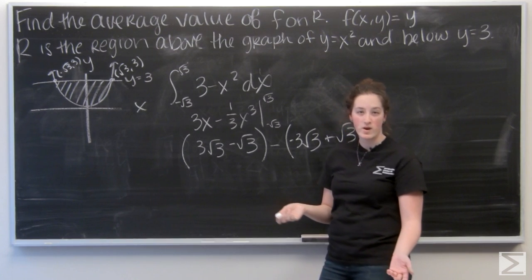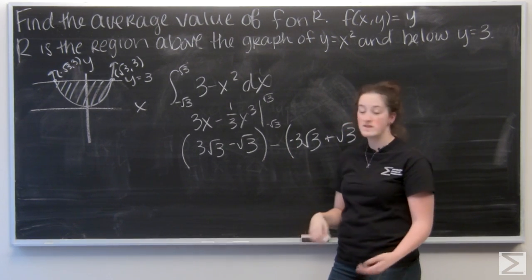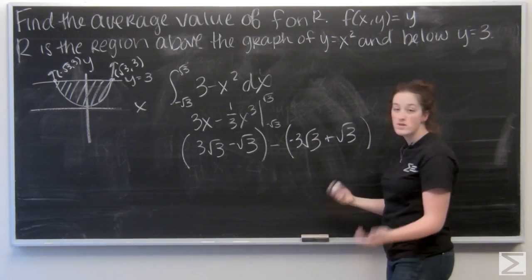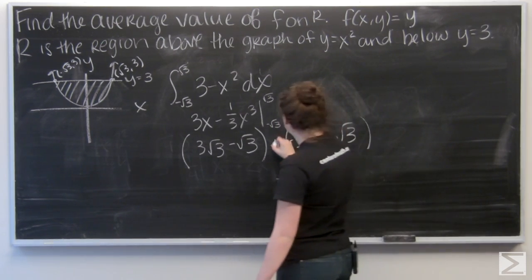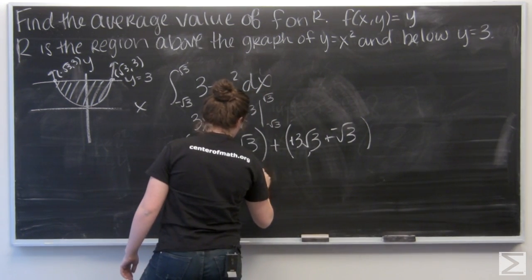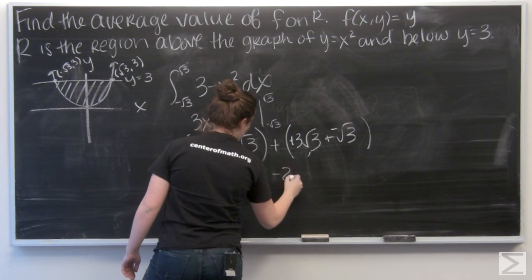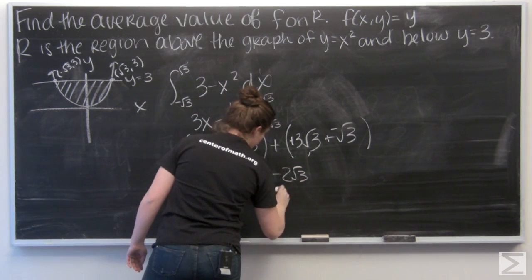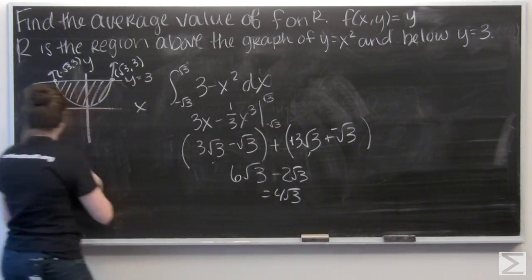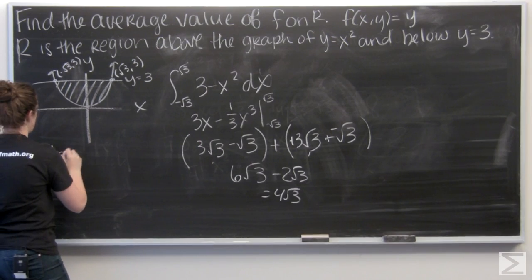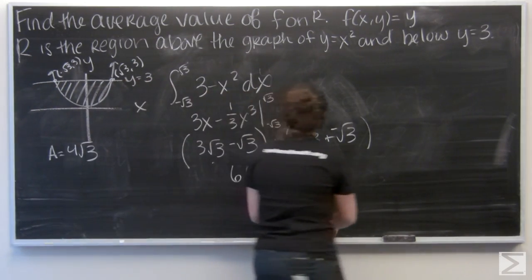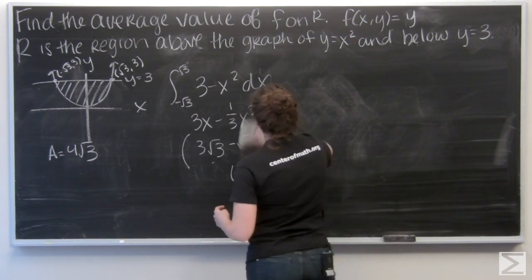But it's the same thing as before. Negative root 3 cubed is negative 3 root 3, and then you have the 1 third, so 3's cancel out. So let me go ahead and add these together. So I've got 4 root 3 as my area. Let me write this over here.